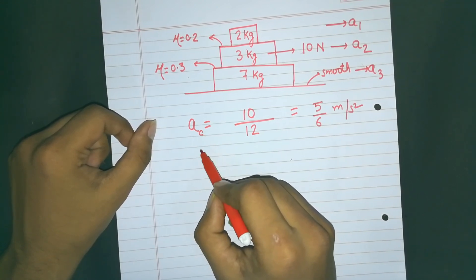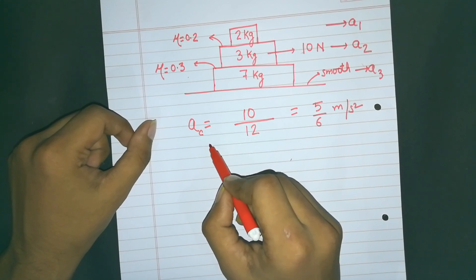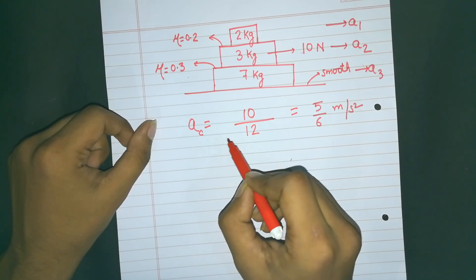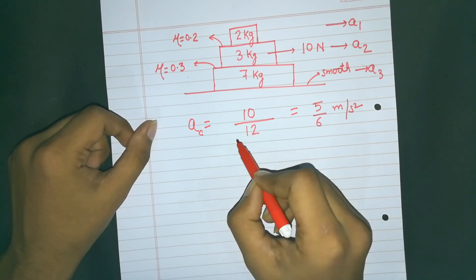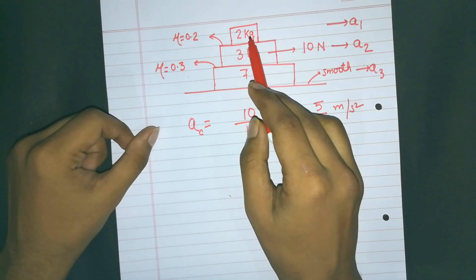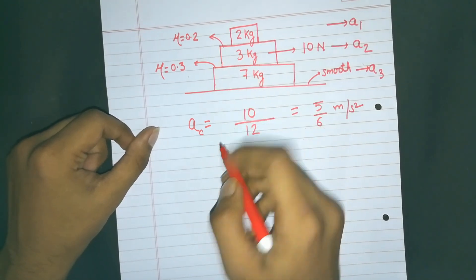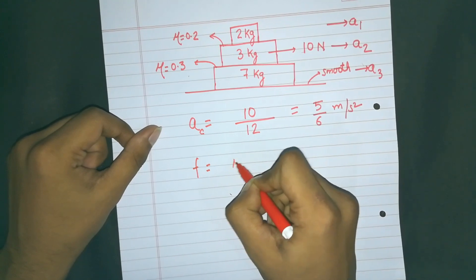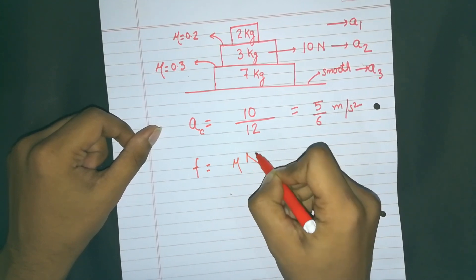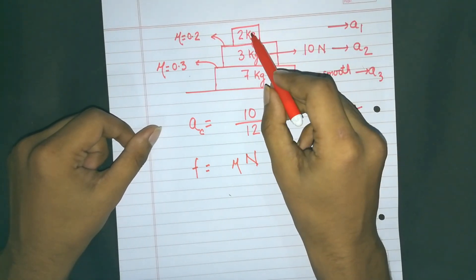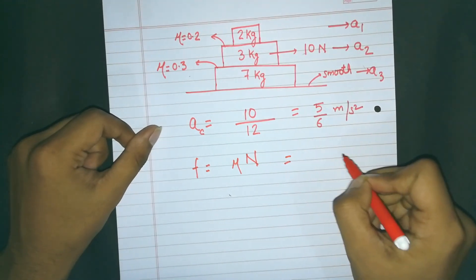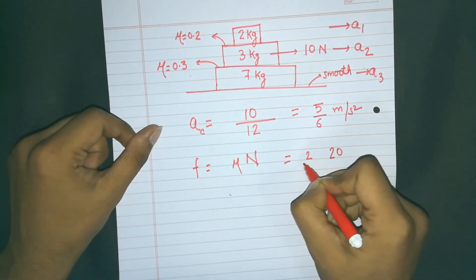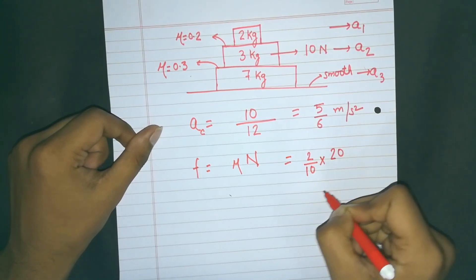Now we have to find if there is sufficient static friction between the surfaces so that the system can move with common acceleration. If there is sufficient static friction, there will be no relative motion. Between the 2kg and 3kg surfaces, the maximum static friction is: coefficient of friction × normal force = 0.2 × (2 × 10) = 0.2 × 20 = 4 newtons.